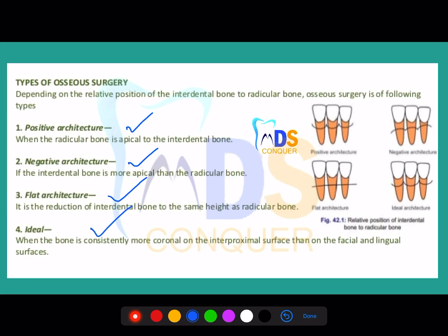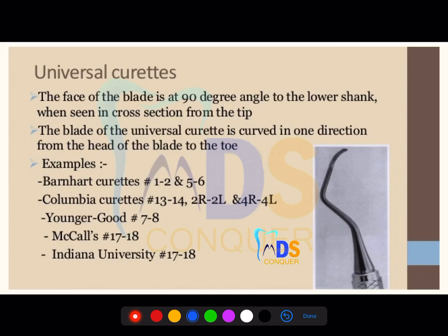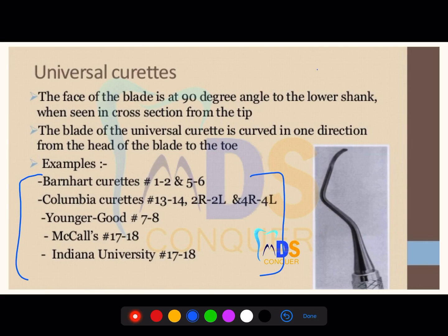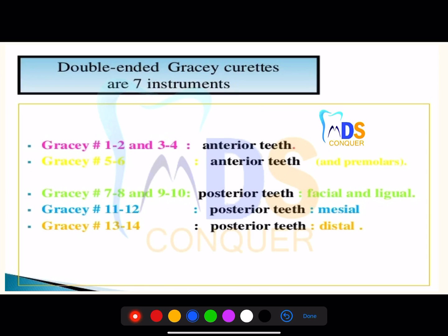There are types of osseous surgeries — positive, negative, flat, and ideal. Make a note of the diagrams as well, since diagram-based questions can be given in this area. Regarding universal curettes — this is a 2018 NEET question where examples of universal curettes were given, so please note the examples and the basic structure of the curette.